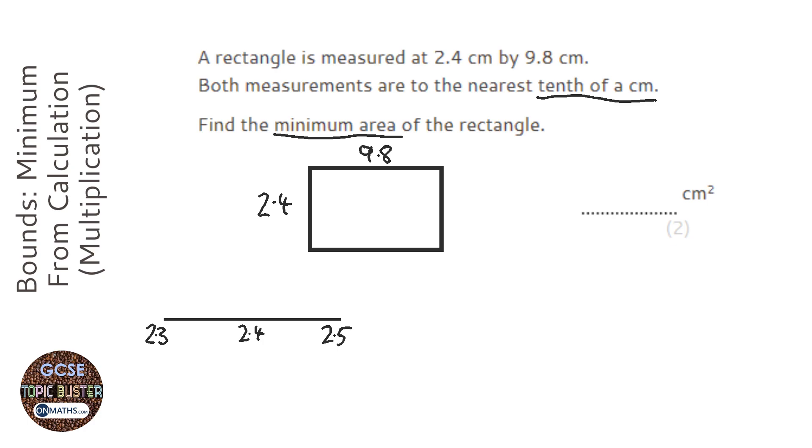And because we're finding the minimum area, I'm interested in finding the lowest it could have been, so that's the halfway point between 2.3 and 2.4, which is 2.35.